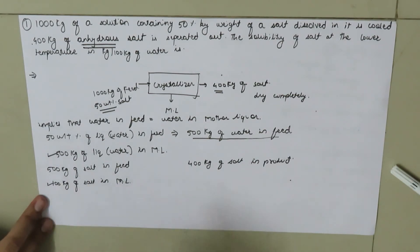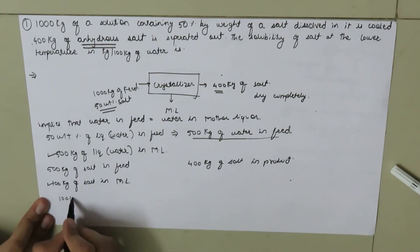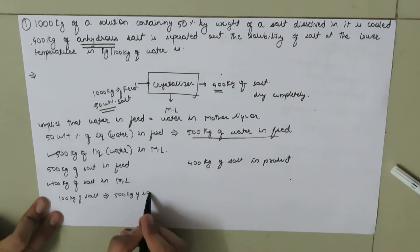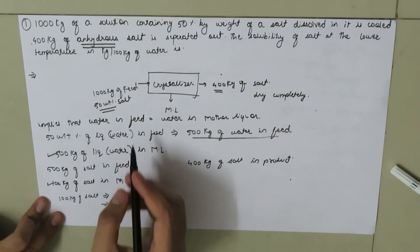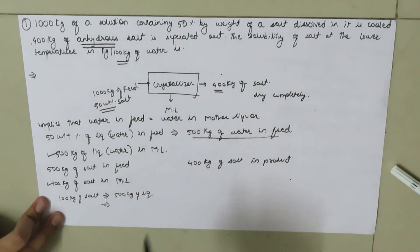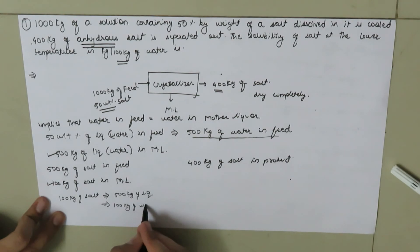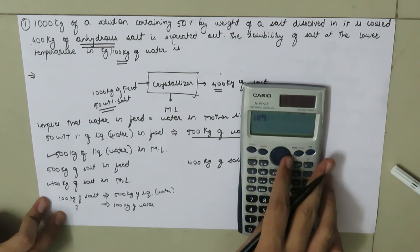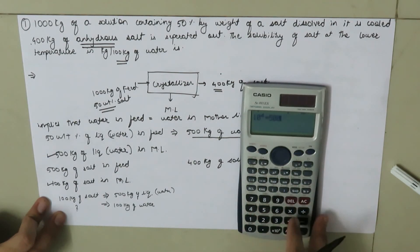So now we have 500 kg of liquid in the mother liquor and 100 kg of salt in mother liquor. That means 100 kg of salt is soluble in 500 kg of liquid. Now they have asked us the solubility for 100 kg of water. So for 100 kg of water, what will be the quantity of salt dissolved? This is 10^4 = 500 × x.